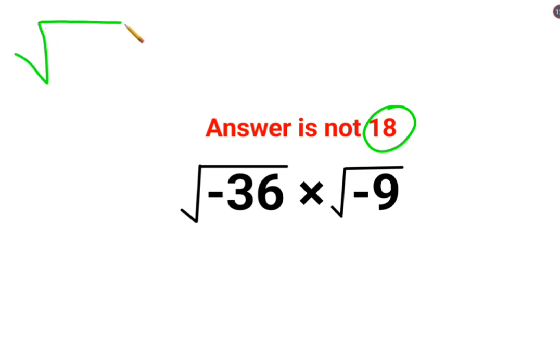See, we can write both of them under a root. So we can do this as 36 multiplied by minus 9, minus 36 multiplied by minus 9. And in mathematics we know the product of two negative numbers is just supposed to be a positive value. So we will have 36 multiplied by 9.